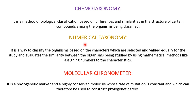Then comes numerical taxonomy. It is a way to classify organisms based on selected characters that are valued equally. It evaluates the similarities between organisms being studied by using mathematical methods like assigning numbers to characteristics. This is actually a computerized, mathematical method used to classify organisms on equally valued characteristics.